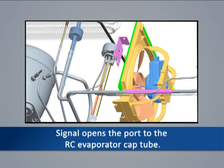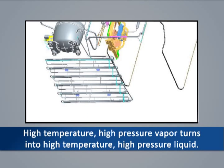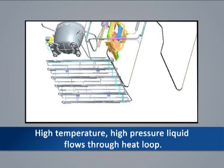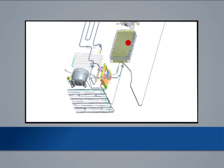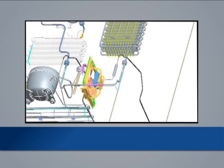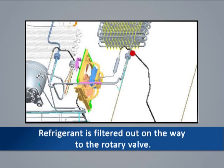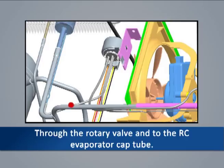One minute later, the control board sends a signal to the rotary valve, opening the port to the RC evaporator cap tube. The high temperature, high pressure vapor flowing through the condenser gives off heat and changes state to a high temperature, high pressure liquid. This liquid then flows through the heat loop routed around the perimeter of the freezer compartment. The heat given off warms the exterior cabinet skin, reducing the possibility of condensation forming. The output of the heat loop goes to the filter dryer, where impurities and moisture are filtered out on the way to the rotary valve. The high temperature, high pressure liquid passes through the rotary valve into the RC evaporator cap tube.